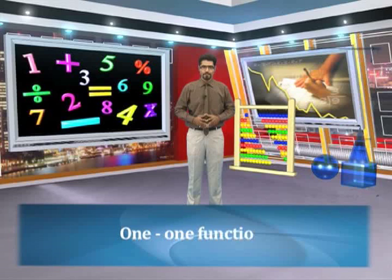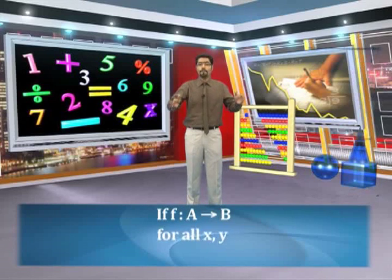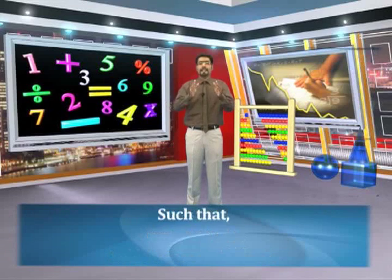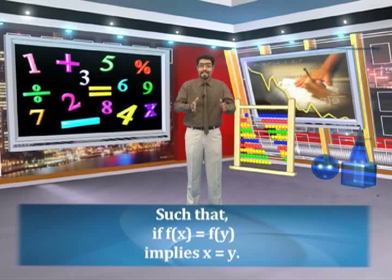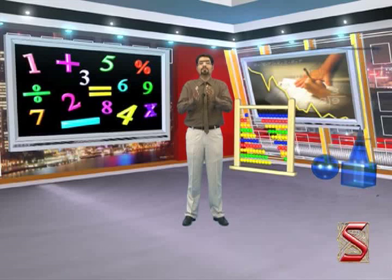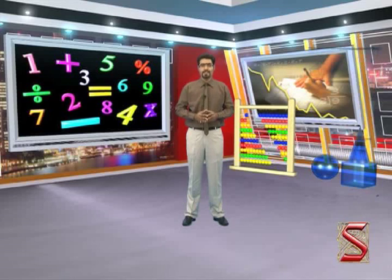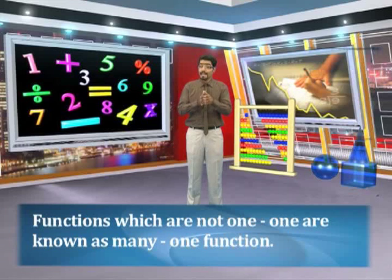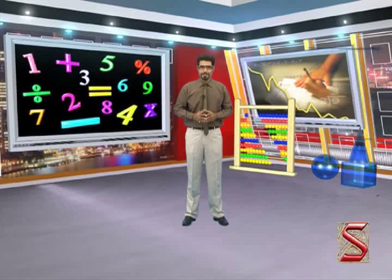One-to-one function: if f is a function from A to B, for all x and y that belong to A, there exists f of x and f of y that belong to B. Now if f of x is equal to f of y, this implies x is equal to y. This is the definition of a one-to-one function. It says that if the images of two elements of a domain are equal, then the two elements must also be equal. So in a one-to-one function, it is not possible for two different elements of the domain to have the same image. Functions which are not one-to-one are known as many-to-one.